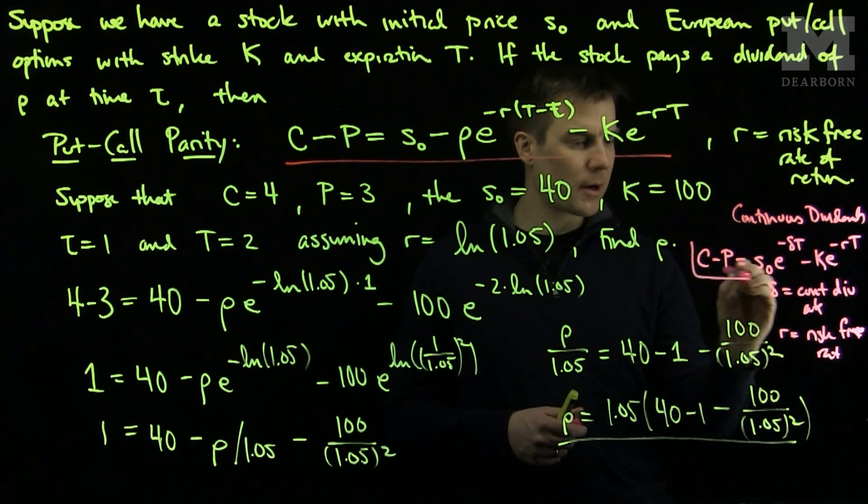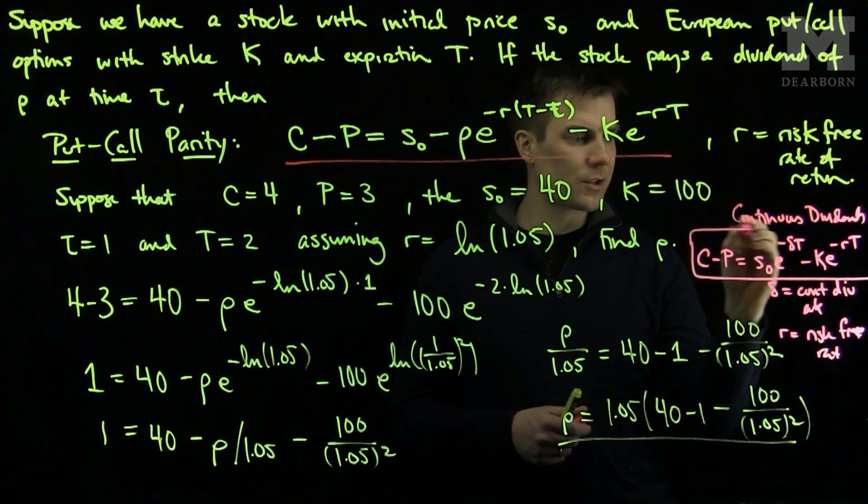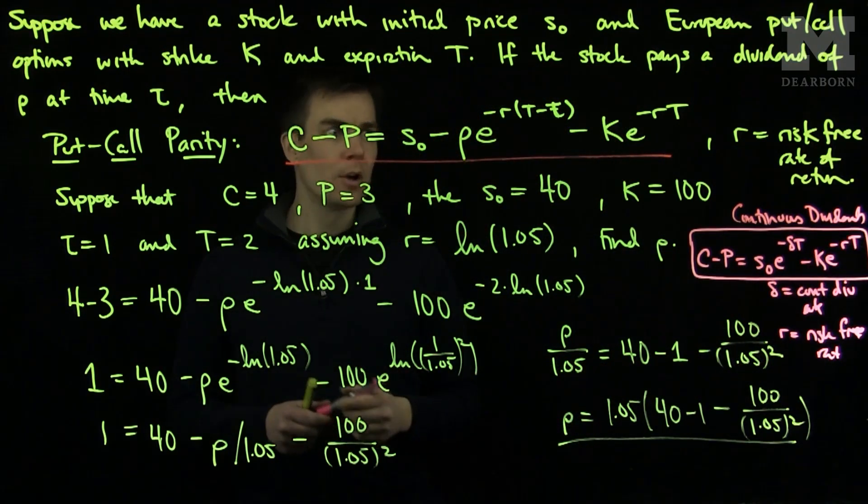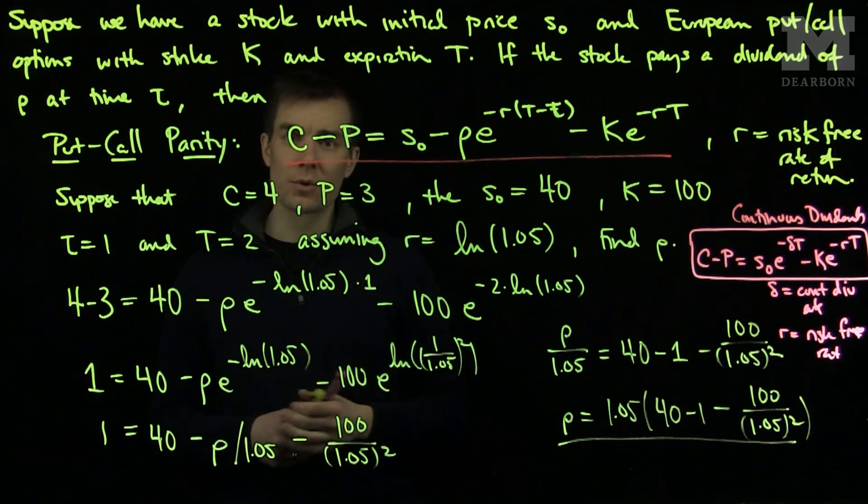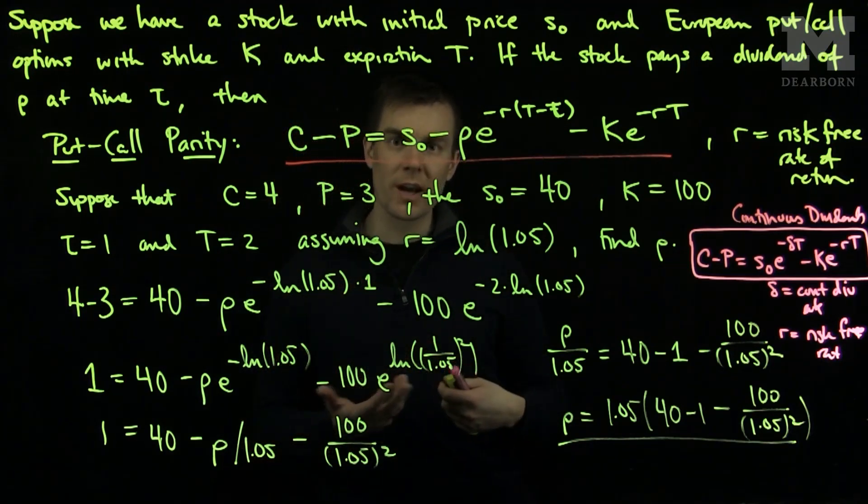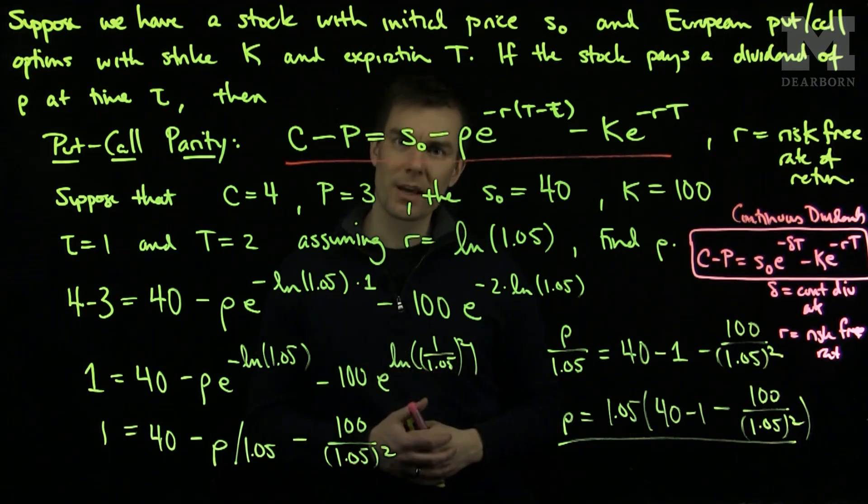This put-call parity is a generalization of the discrete case when I add up a finite number of dividends and pass to the limit. So either of these formulas can be used when trying to find values of puts, calls, initial stock prices, dividend rates, or strike prices. Thank you very much.